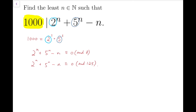Now we know that for these individual powers — say 2 to the n — it will always be congruent to 0 mod 8 when n goes beyond 3. Or 5 to the n will be congruent to 0 mod 125 when n goes beyond 3. So I am going to deal with these cases separately.